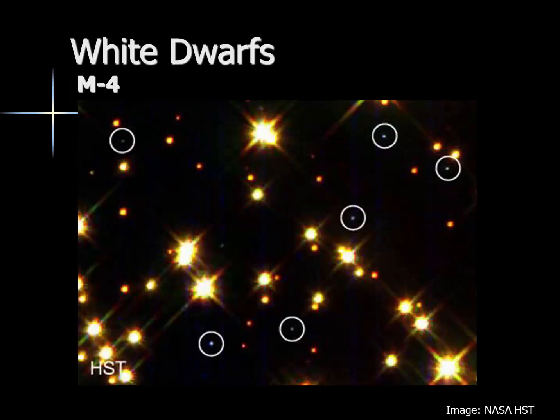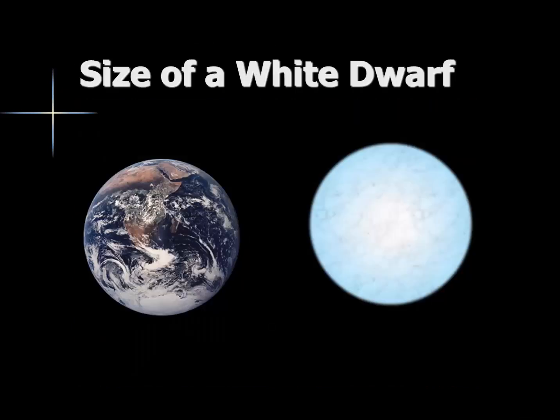There are some star clusters, such as M4, where we see numerous old white dwarfs, all of them indicated here with circles in this image from the Hubble telescope. Let's talk a little bit about the size of a white dwarf. With the extreme size of nebulas and red giants, the white dwarf is actually quite small by comparison — a white dwarf may be just about the size of planet Earth.